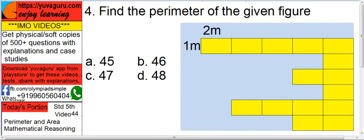Find the perimeter of the given figure, this yellow figure. Now each part is given as 2 meter length and 1 meter breadth. So perimeter means what? The length of the outside area, nothing inside. So let's first find out.